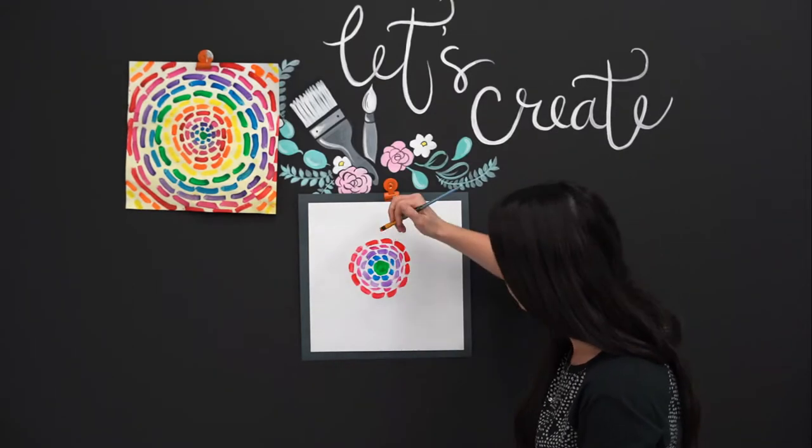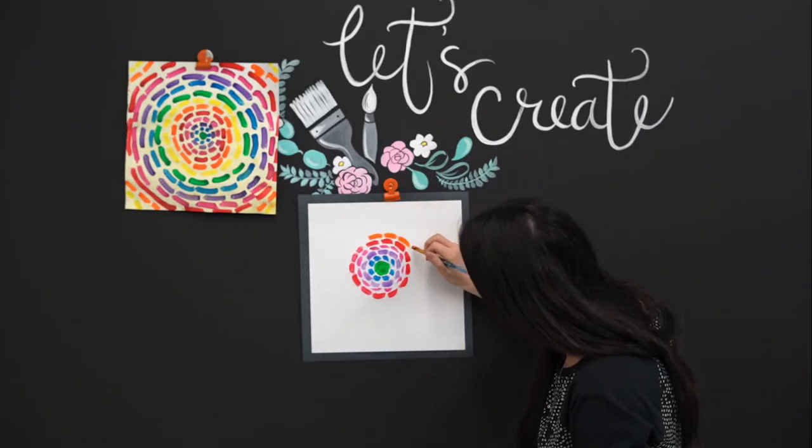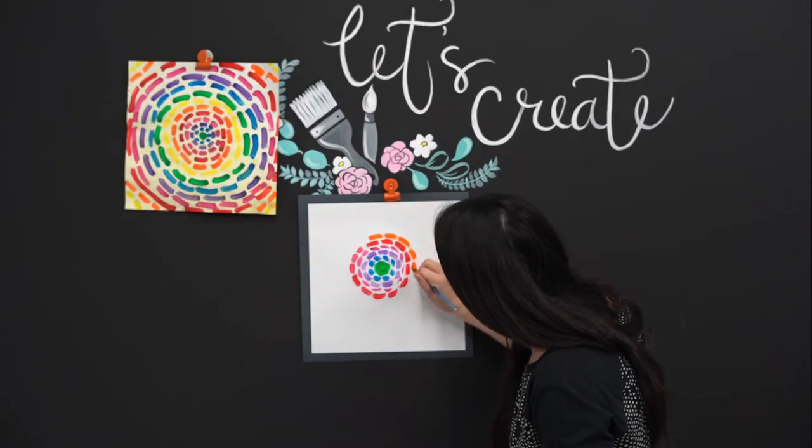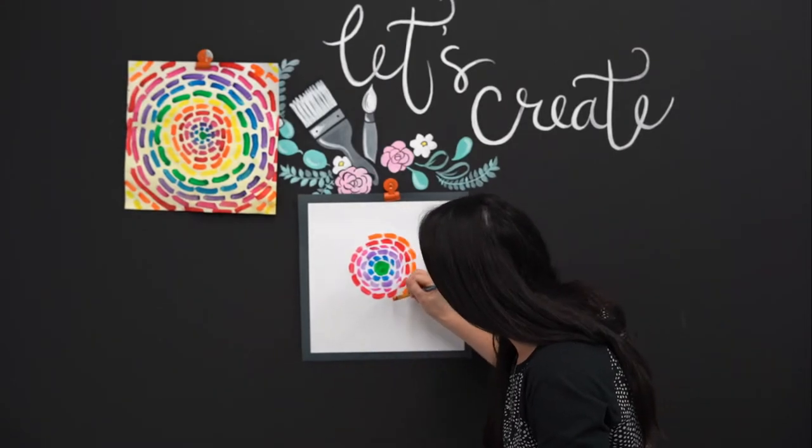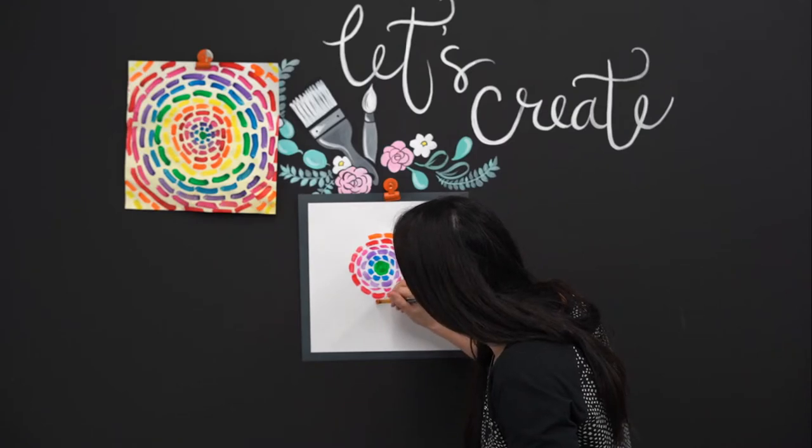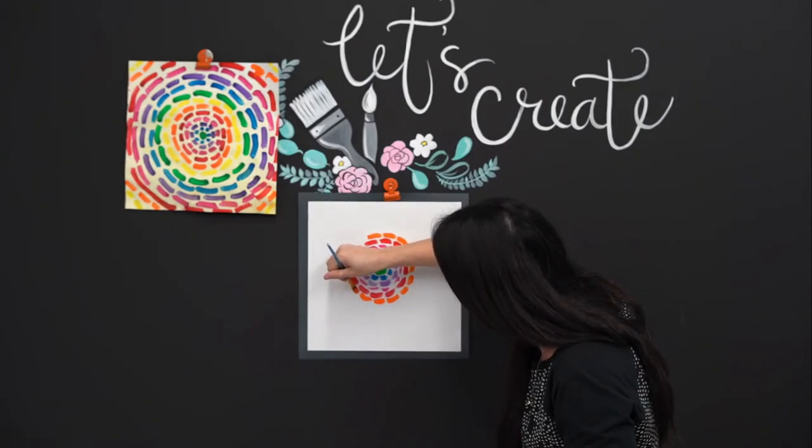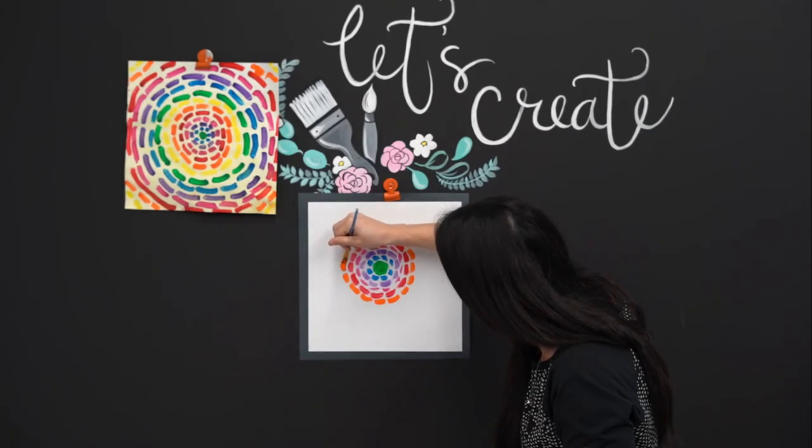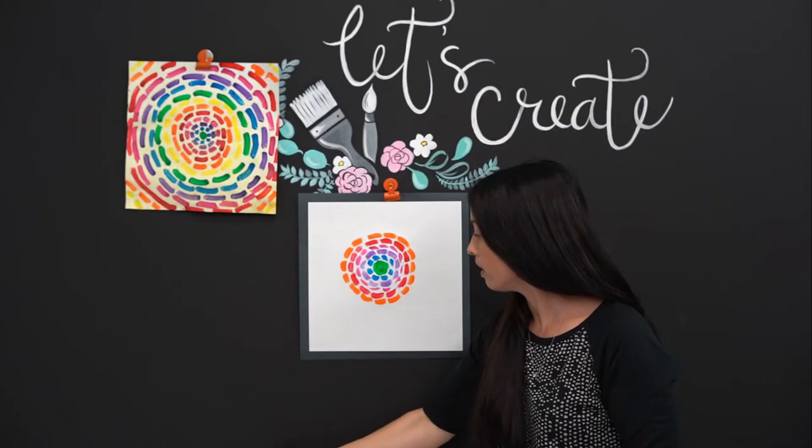I'm going to switch on over to orange. My circle is getting bigger. Again, I'm getting close to my red, but I'm not touching it. We kind of made that a game in third grade today. That was their challenge: get as close as you can, but don't touch the red, don't touch the other color that's neighbors to it. Clean off my brush.